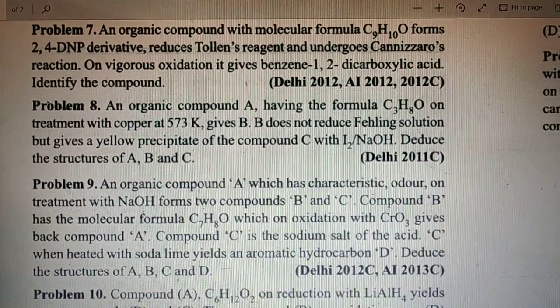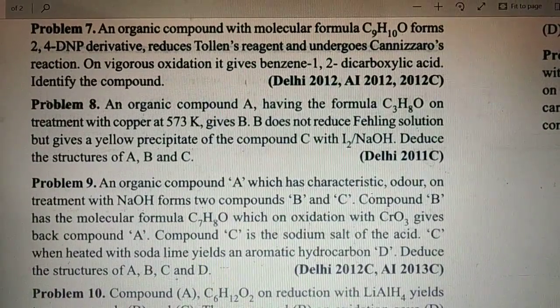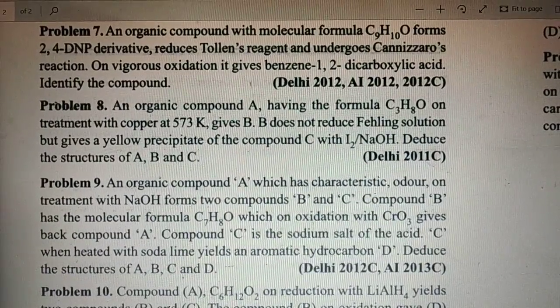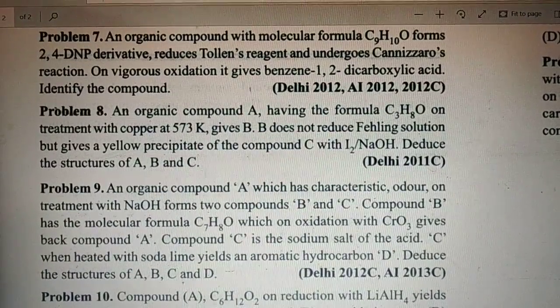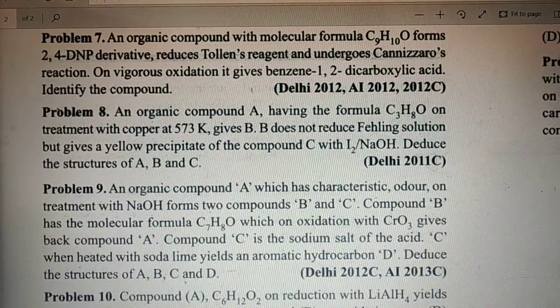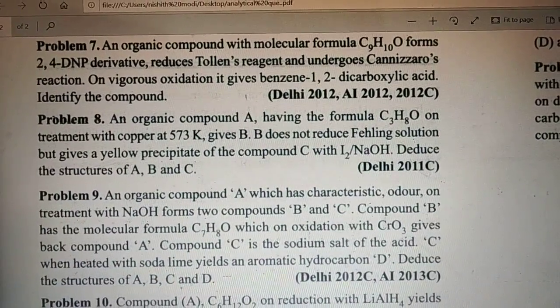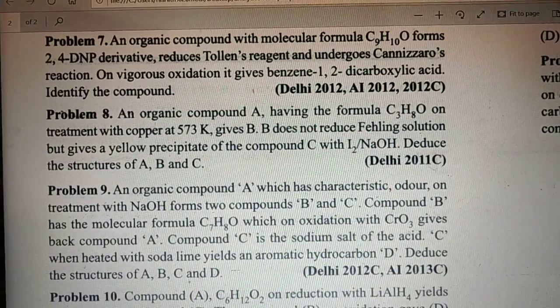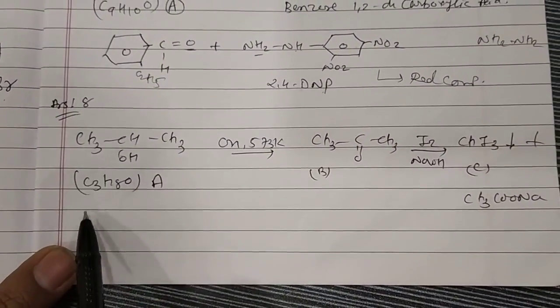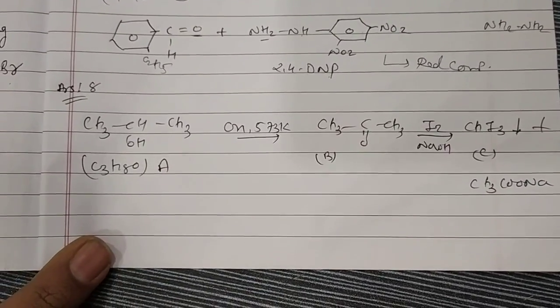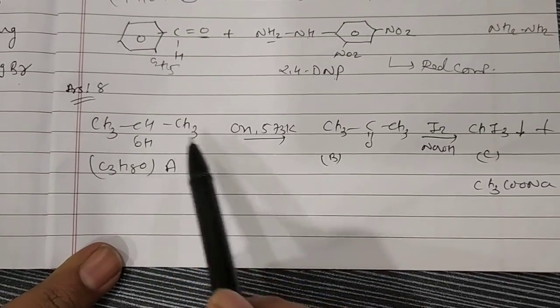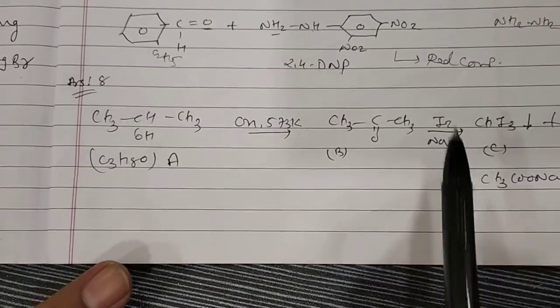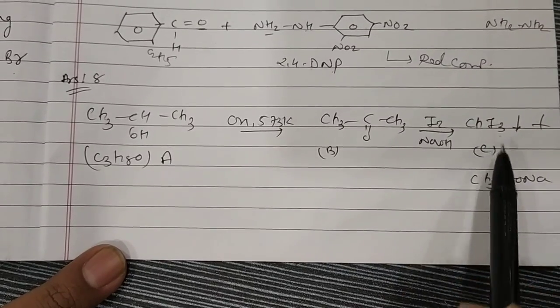Let's start this 8th numerical. Organic compound A having formula C3H8O on treatment with copper at 573K. Remember primary alcohol, secondary alcohol, tertiary alcohol treatment with copper at 573K. B does not reduce Fehling solution but gives yellow precipitate with I2 and NaOH, means iodoform test is positive. Deduce structure of A, B, C. So your starting material C3H8O is CH3CHOH-CH3, copper at 573K. Where there's CHOH you get CO, that is CH3COCH3. Now B undergoes I2 in NaOH, that is iodoform test. Iodoform test is given by CH3CO compound acetone, and you get CHI3 that is iodoform, your compound C, and CH3COO is byproduct.